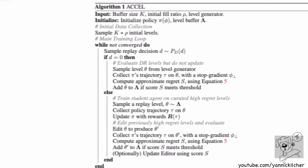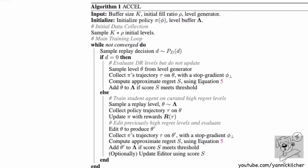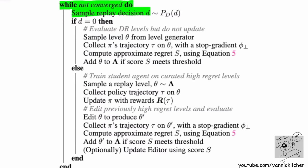Now let's dive a bit more into the algorithm itself. There's still a crucial element: the regret. The algorithm in code looks like this: initialize a policy pi (the student) and a level buffer lambda. Sample some initial levels — they'll be mixed in difficulty, some easy, some hard, some the student might solve out of the box. Then we go into a while-not-converged loop and sample a replay decision — a binary variable telling us whether to take a level from the buffer or a new level from the generator.